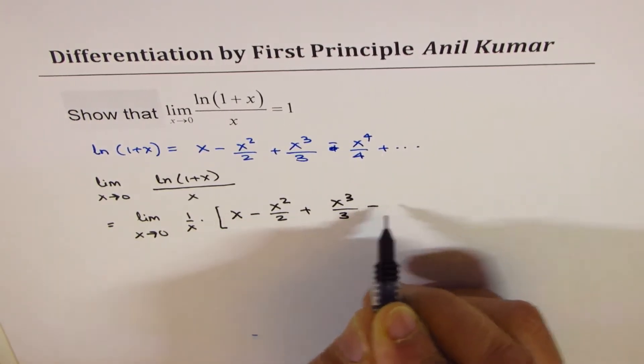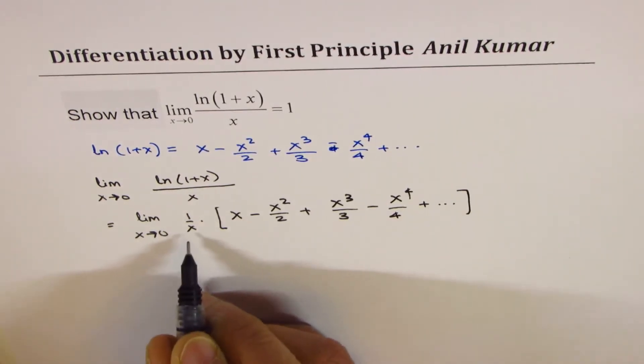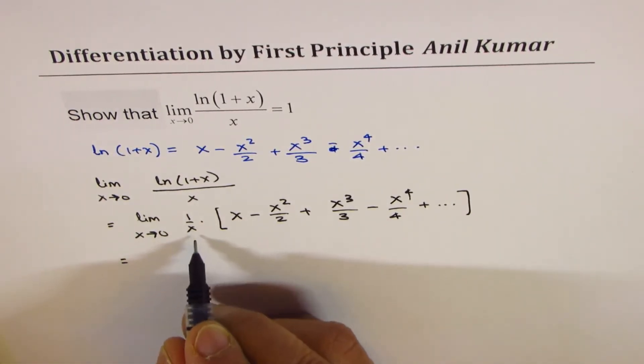So if you open the bracket, multiply by 1 over x.